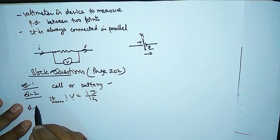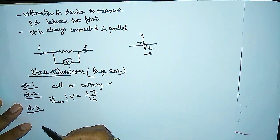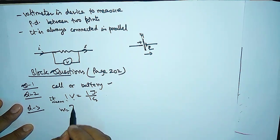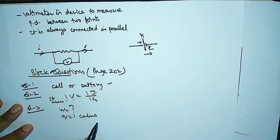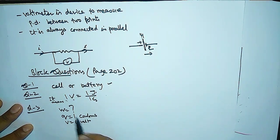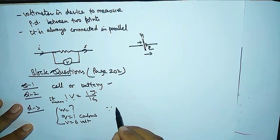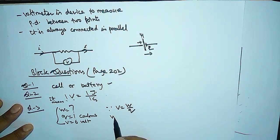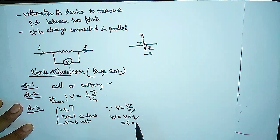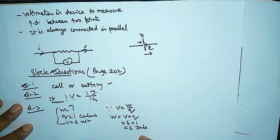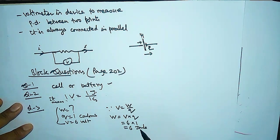Question 3: How much energy is given to each coulomb of charge passing through a 6 volt battery? Here Q equals 1 coulomb and V equals 6 volt. Using the formula W equals V into Q, we get W equals 6 times 1 equals 6 joule. So 6 joule of energy is required to flow 1 coulomb of charge through the 6 volt battery.